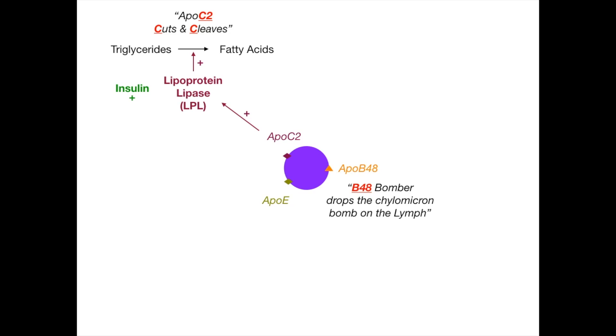Now these remnants, which can be chylomicron remnants, VLDL, IDL, LDL, all of the stuff, everything that in your brain you associate with lipid transport has to be broken down into remnants so that the system can recycle it.